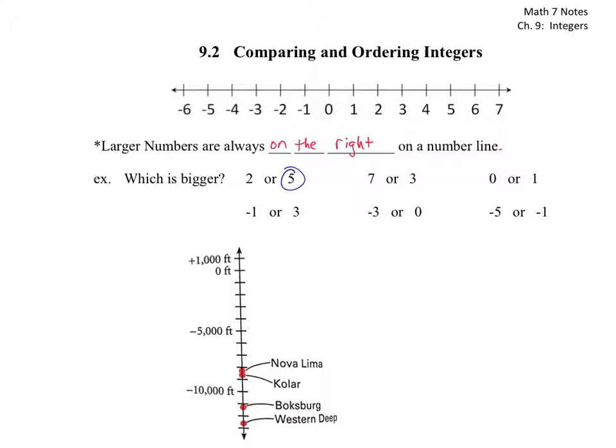And if you have a 7 and a 3, well, for that, we have a 7 right there, we have a 3 right there. So the 7 has to be the bigger number of those two. Then if we have a 0 or 1, that's probably the last one that's going to be super easy, but you have the 0 right there and the 1 right there. So the 1 is on the right, so it is bigger.